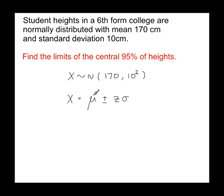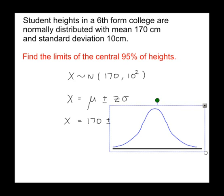Well, the mean we already know is 170, so we've got X equals 170 plus or minus z. That's something we need to work out using the normal distribution. So if we start with a sketch of the normal distribution,